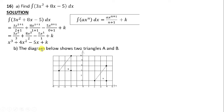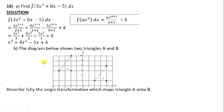Question b shows two triangles A and B. Describe the single transformation which maps triangle A onto B. When you look at the transformation from A to B, you find that the shape has not changed — it is still the same size and has not rotated. So this is a translation.